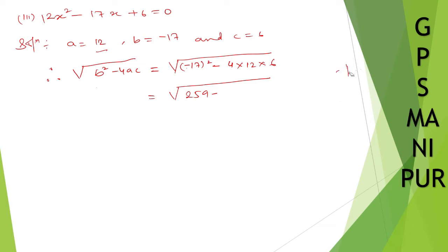Wait, this is not correct. So 17 × 17 it will be 7 × 7 is 49... 7 × 1... So it is 2, 8, 9.